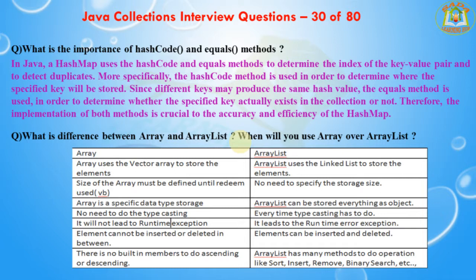Arrays use a vector array to store elements; ArrayList uses a linked list. The size of an array must be defined beforehand; ArrayList requires no need to specify storage size upfront. Arrays are specific data type storage; ArrayList can store everything as an object. With ArrayList, type casting must be done each time, which can lead to runtime exceptions since different types of values can be stored. Elements cannot be inserted or deleted in-between in an array; ArrayList supports insertion and deletion. Arrays have no built-in methods for sorting; ArrayList has many methods for operations like sort, insert, remove, and binary search.